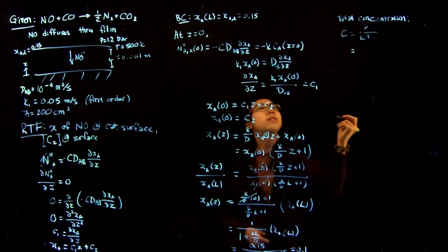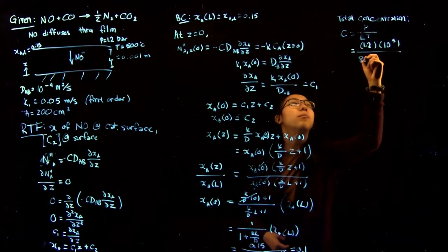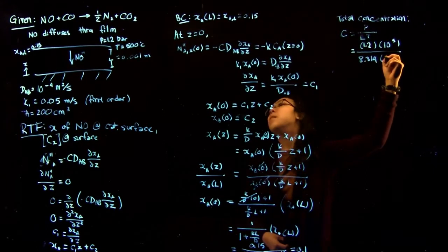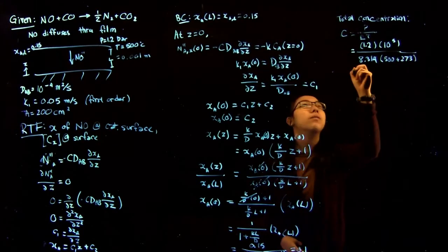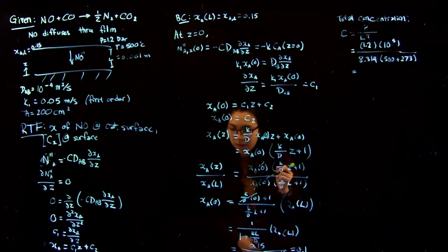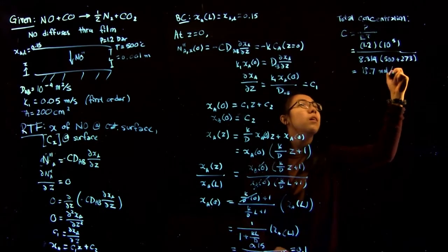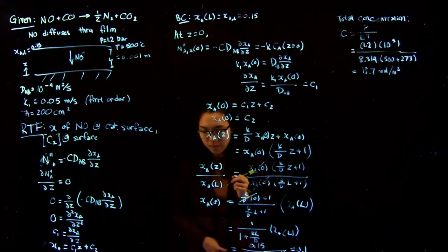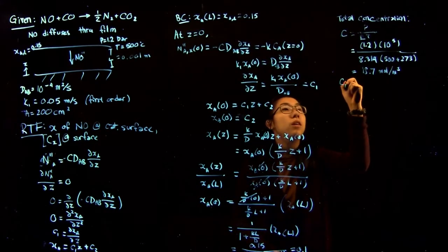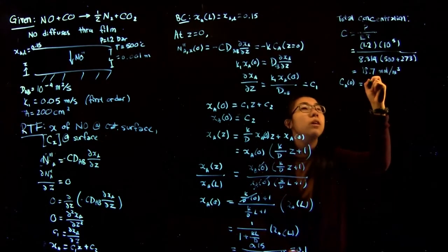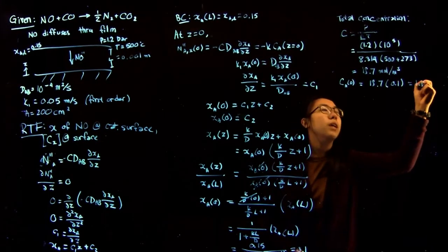So substituting our values, this gives 1.2 bars times 10 to the 5 Pascals over 8.314 times the temperature of 500 Celsius plus 273, so we're converting to Kelvin. And this gives us a value of 18.7 moles per meter cubed. So the next thing we can do when we want to find the concentration of A at zero is simply multiply the two. This gives 18.7 times 0.1 is 1.87.